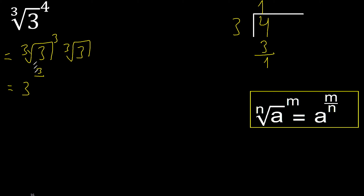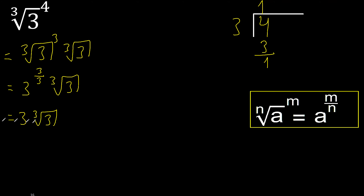Exponent divided by — 3 divided by 3 is 1. Exponent 1, therefore equal. Ok, thank you.